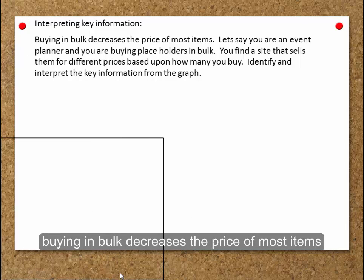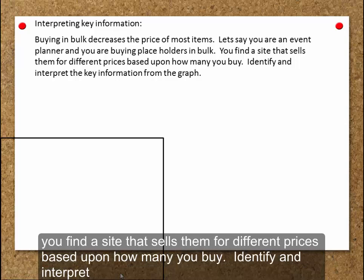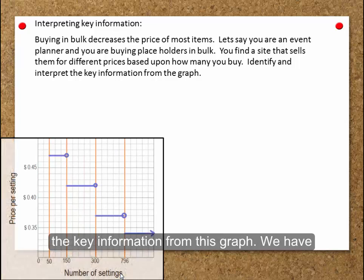Buying in bulk decreases the price of most items. Let's say you're an event planner and you're buying placeholders in bulk. You find a site that sells them for different prices based upon how many you buy. Identify and interpret the key information from this graph.